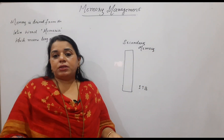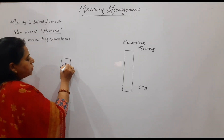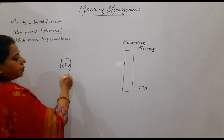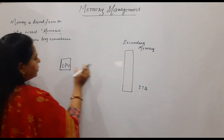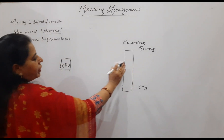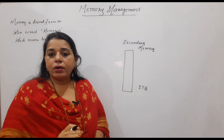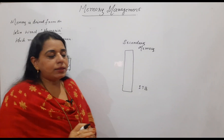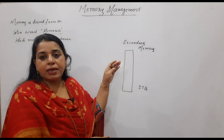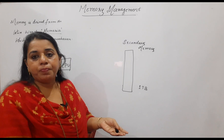1TB is a very huge size. The CPU is there; the CPU wants to execute the instruction. So whenever the CPU wants to execute a program, to fetch an instruction from this secondary memory will take a very, very long time. The reason is that if you are having a very bigger size, then the time spent in searching the instruction will also be more.